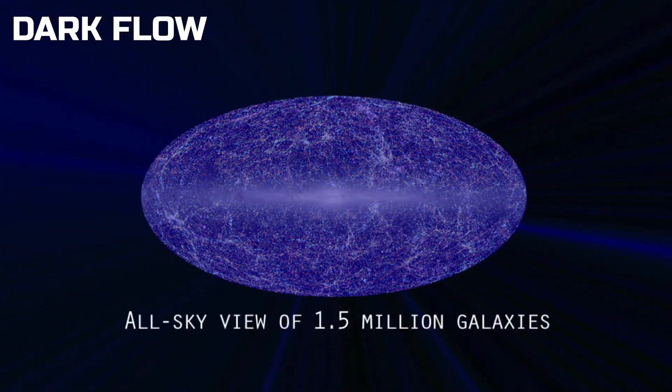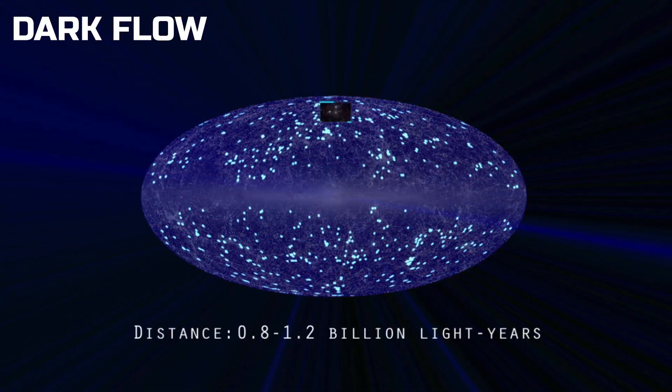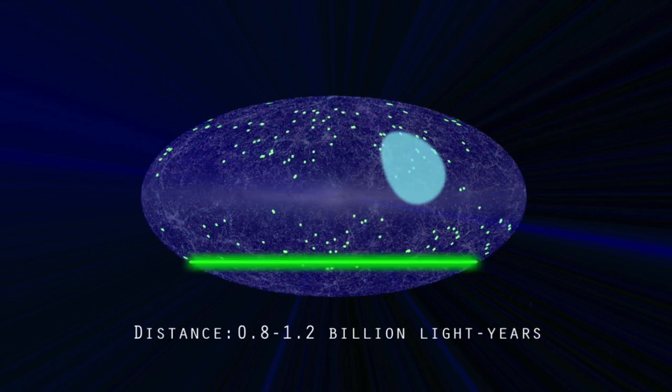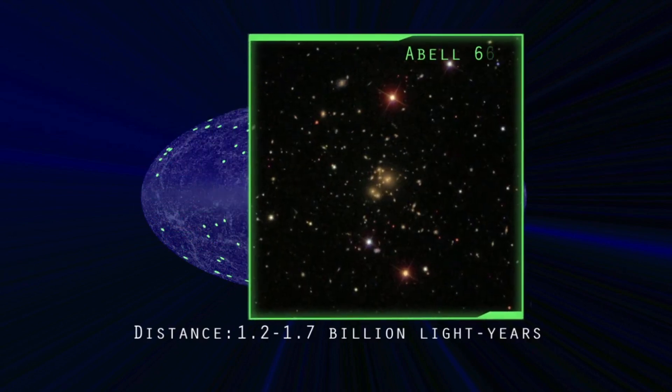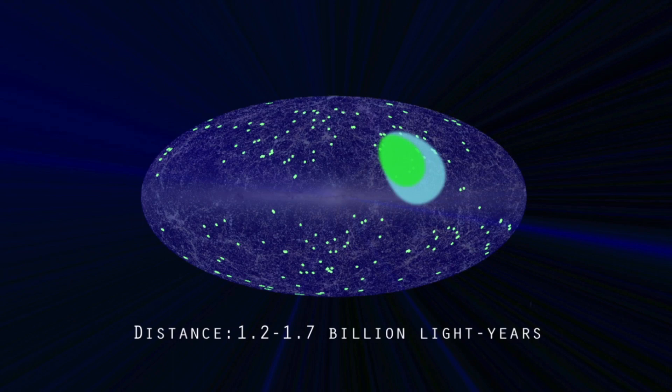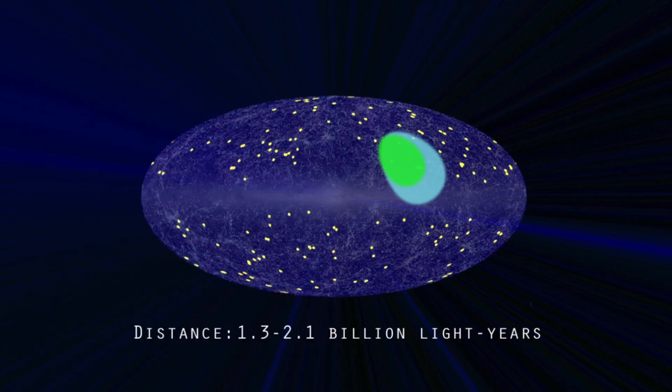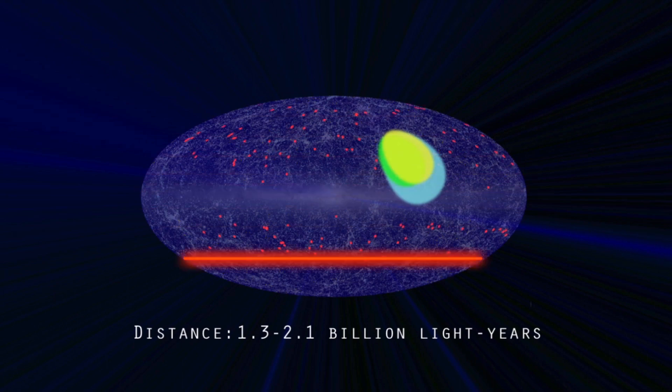Dark Flow. In the early 2010s, astronomers noticed that hundreds of galaxy clusters seem to be moving at a significant speed towards a specific region in the sky. This motion was detected through the study of the Cosmic Microwave Background Radiation, CMB, which is the remnant radiation from the Big Bang.